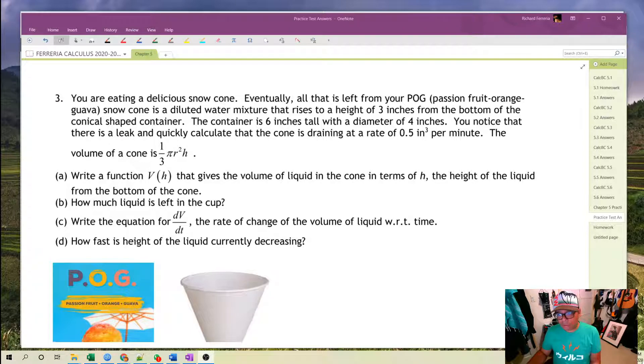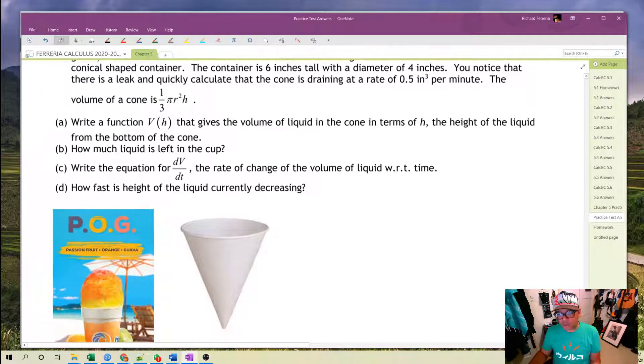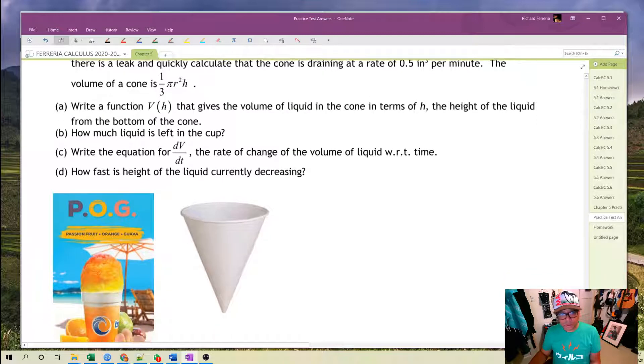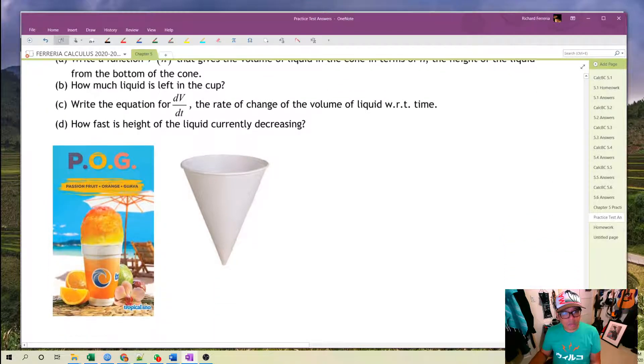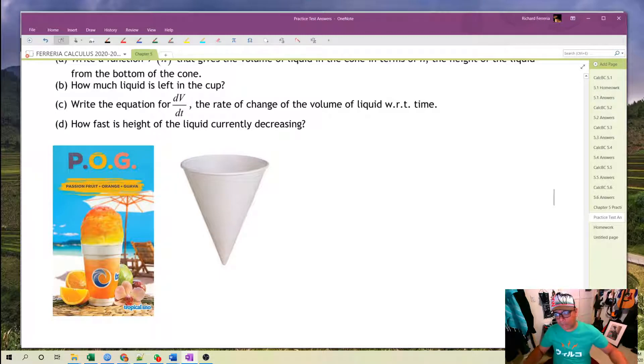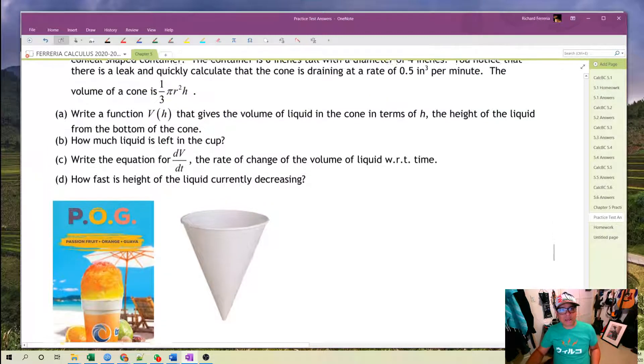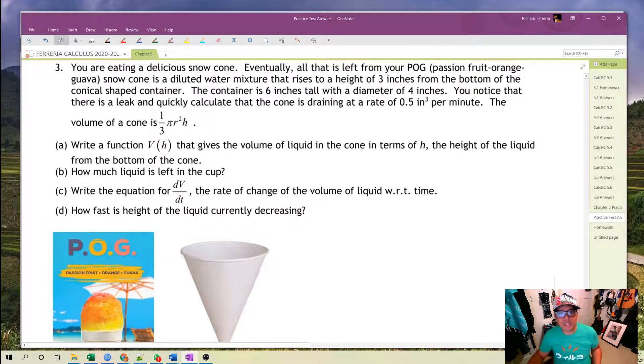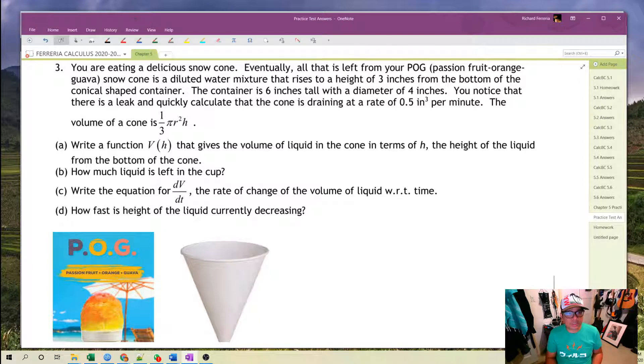The volume of a cone is one-third pi r squared h. So let's take a look at our cone here and let's start to mark this up a little bit. We see that our cone has dimensions of, well, if diameter is four inches, then the radius is going to be two inches.